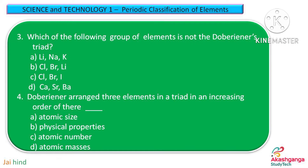Question 3. Which of the following group of elements is not a Dobereiner's Triad? Option A: Li, Na, K; Option B: Cl, Br, Li; Option C: Cl, Br, I (chlorine, bromine and iodine); and Option D: Ca, Sr, Ba.